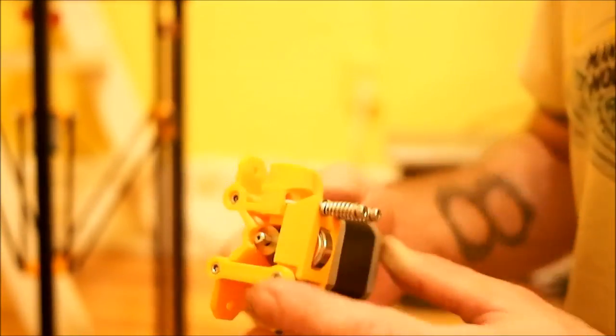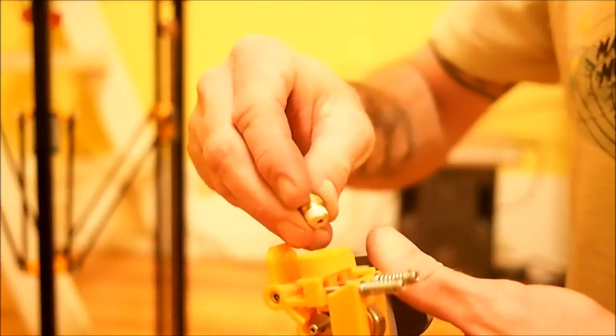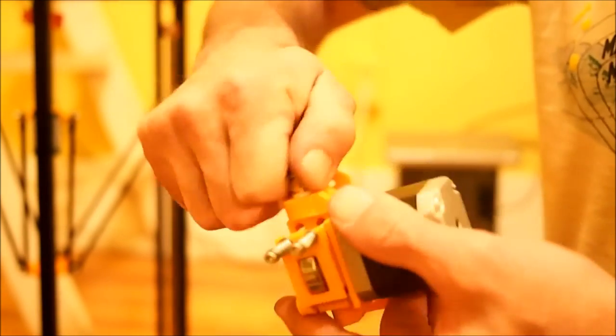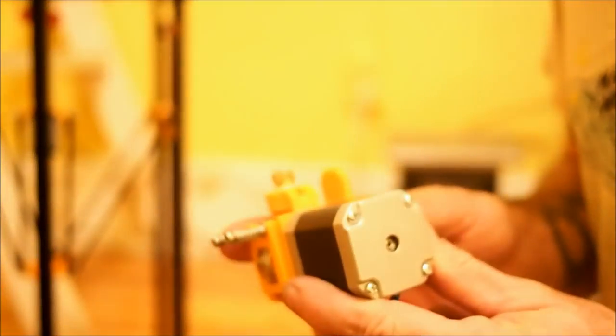You can see here that we have our entire extruder assembled and it's looking pretty good. The last step will be to install the brass press fit in here. It screws down in like that and then a set screw holds it in place. So we'll go ahead and do that and then set this aside and call it done.